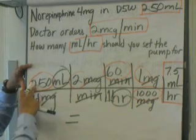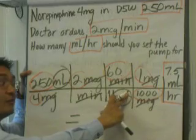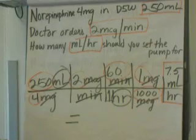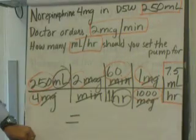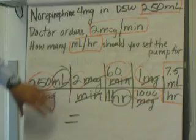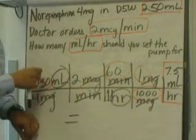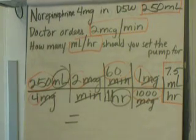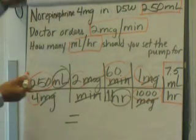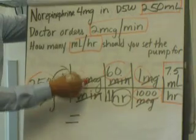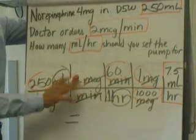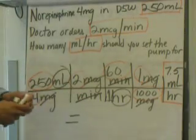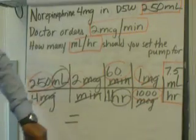Always do the math at least twice to make sure you get the exact same answer. This method is foolproof — you know you have the right or wrong answer because if you put something on the wrong side of the equation, it will totally mess up your answer. You have to know that if you cancel something from the bottom, it has to be canceled from the top, and vice versa.